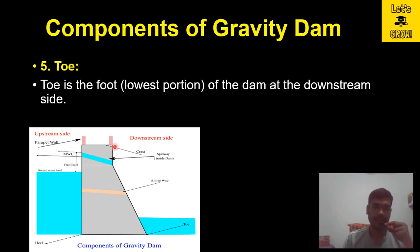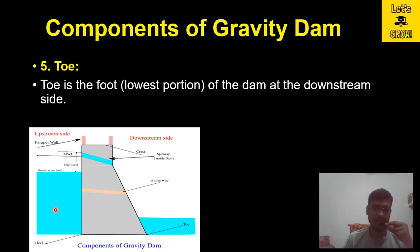The fifth component of a gravity dam is the toe. The toe is the foot or lowest portion of the dam at the downstream side. This is the upstream side of the dam, and the lowest point on the downstream side is known as the toe.